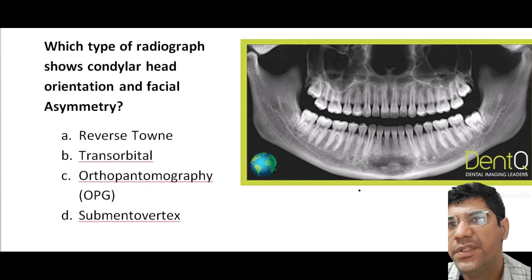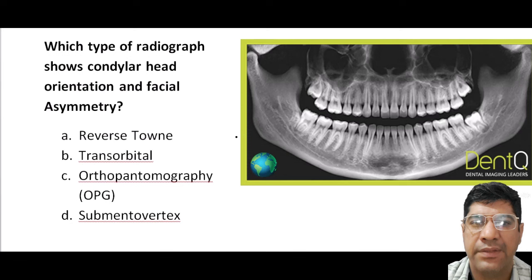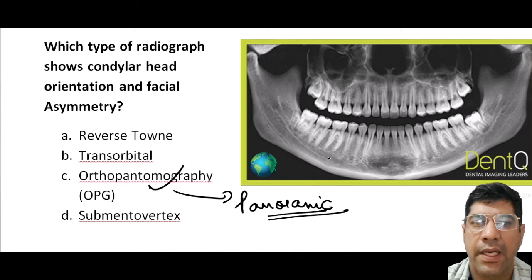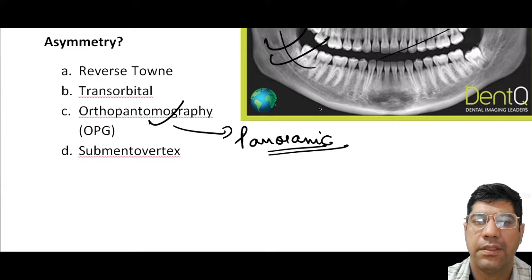Which type of radiograph shows condylar head orientation and facial asymmetry? It is the OPG — Orthopantomogram — also known as the panoramic radiograph. It provides a view of the entire maxillofacial region including the condylar heads of the mandible and is useful for assessing condylar head orientation and identifying facial asymmetry due to differences in the condylar region.